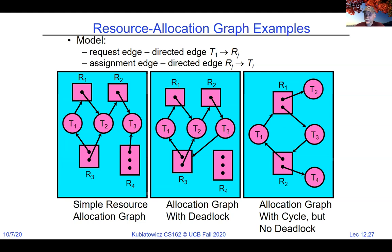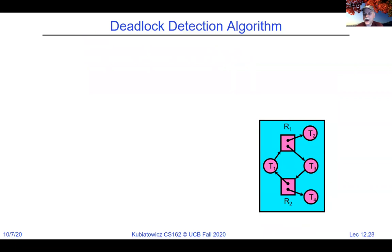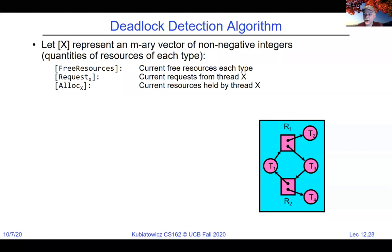Here's a simple deadlock detection algorithm. We'll have a vector of resources — a comma-separated list for each resource R1, R2, R3, R4 — indicating how many of those resources are currently free.